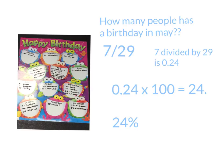So how many people has a birthday in May? Seven out of 29 people, so seven divided by 29 is 0.24. So it's 0.24 times 100 equals 24, so it's 24%. The reason you're multiplying by 100 is percent means per hundred.